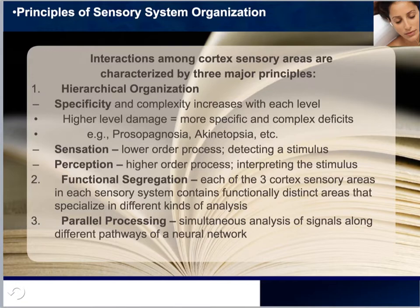Sensation and perception are the two end products of how we process information. Sensation is the lower-order process — analogous to the frontline employees dealing with customers directly, or in the case of vision, the retina. Perception is the higher-order process — like the CEO or executives of the business — and this is where we interpret the stimulus, in other words, process or perceive the information.